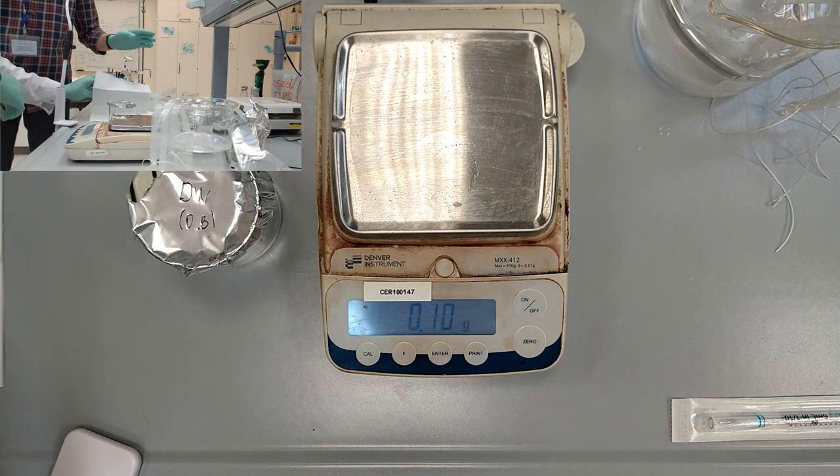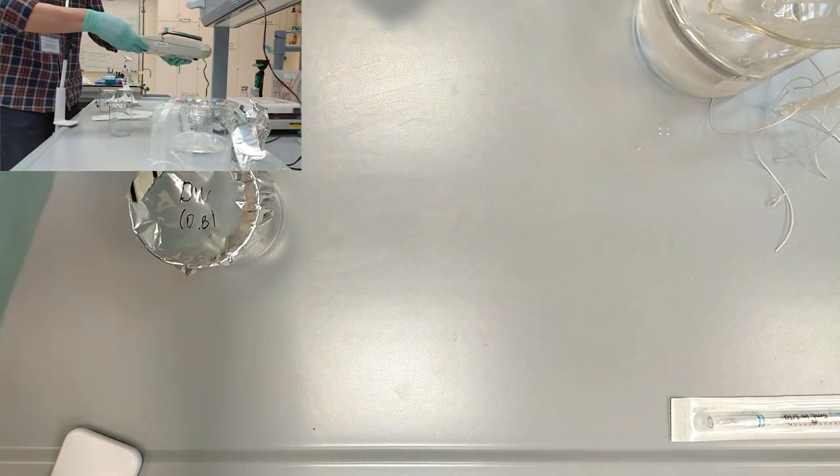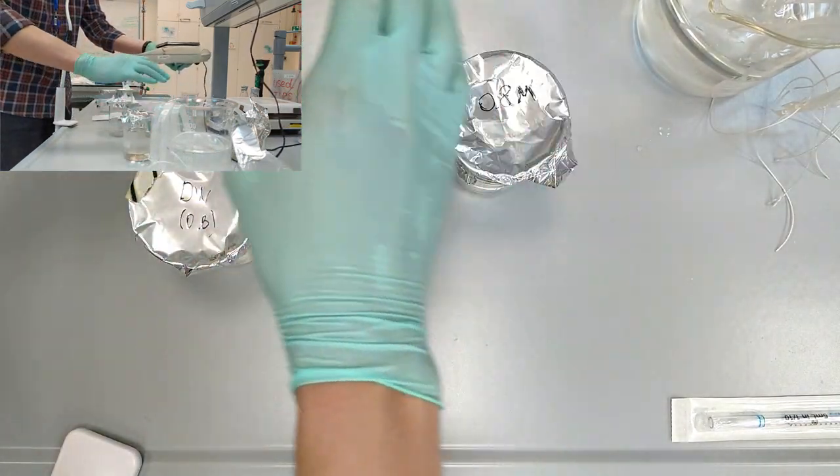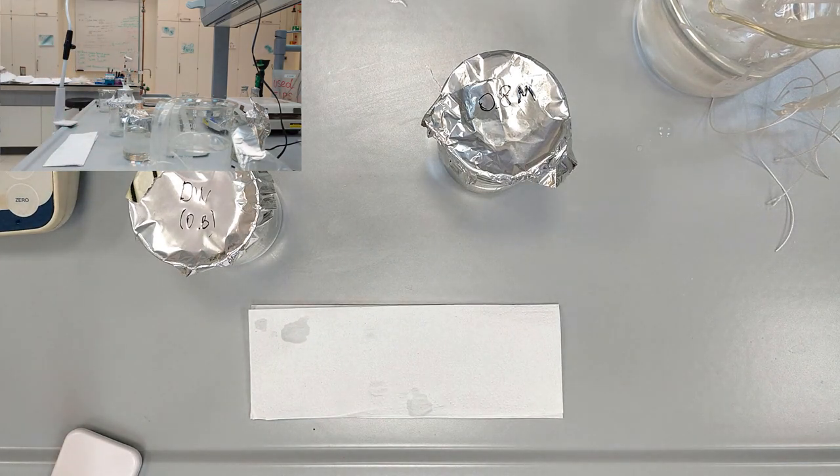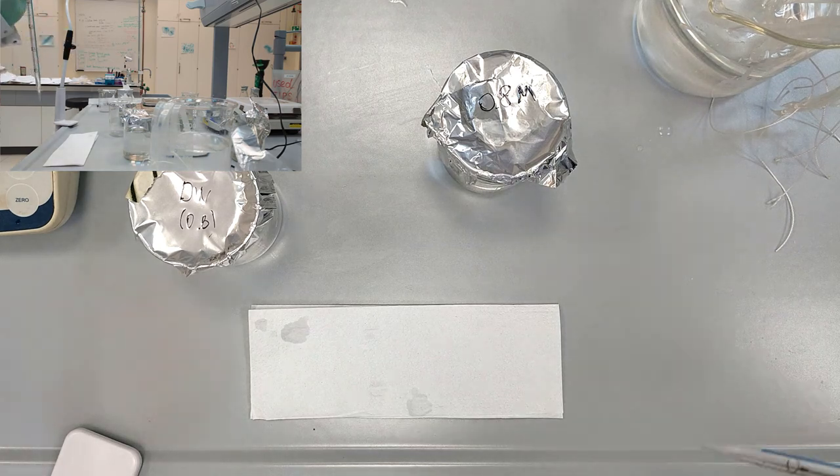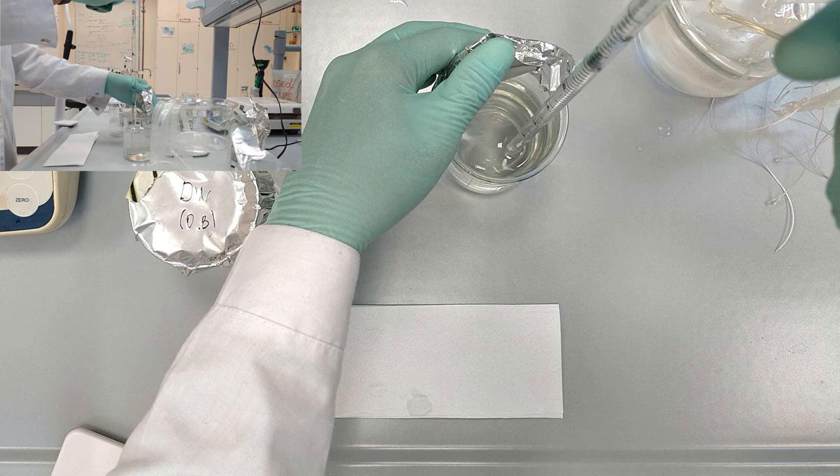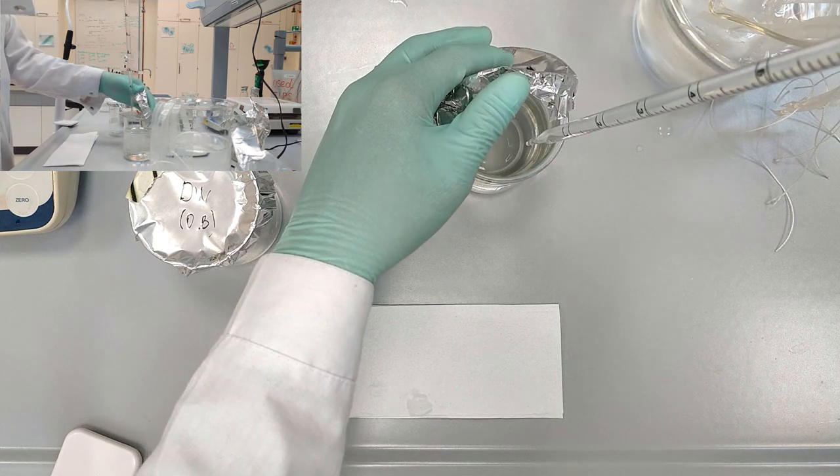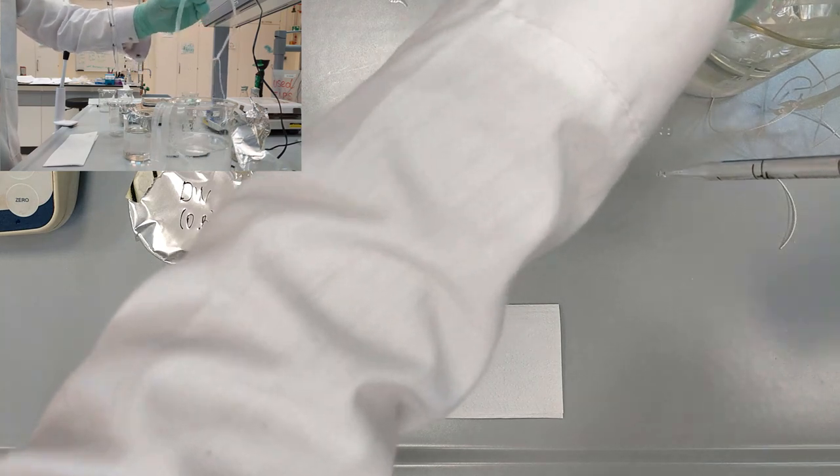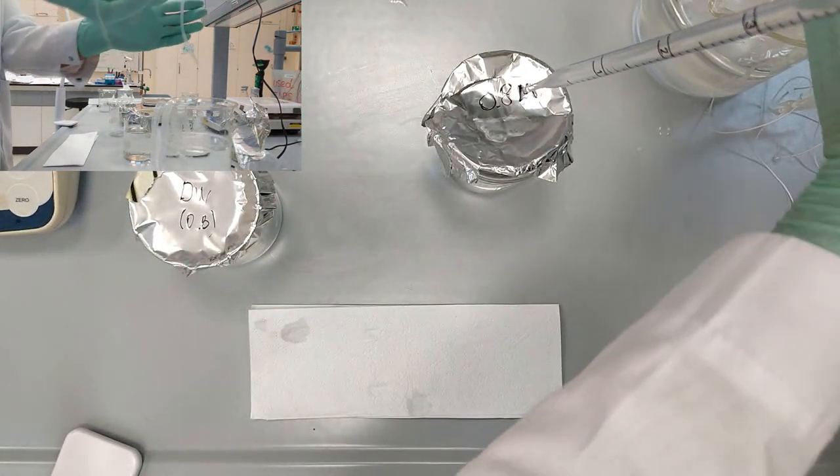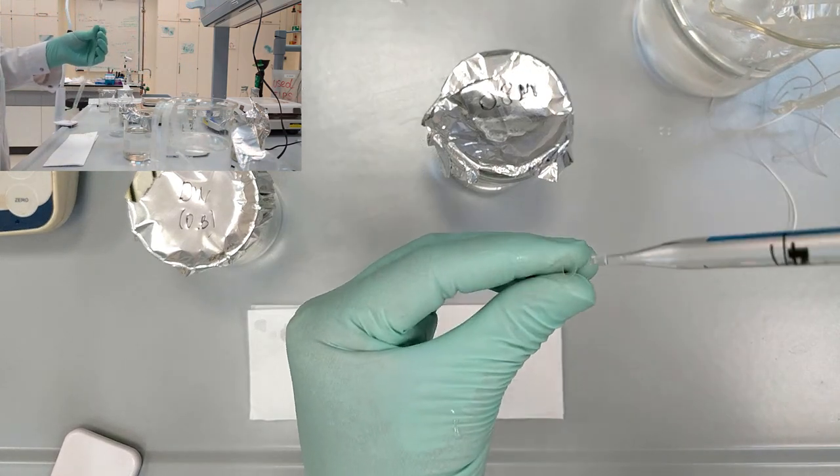The same preparation of the dialysis tube will go for 0.8 and 0.4 mols per liter concentrations. Pipet up the appropriate volume of the solution, take the dialysis tube, open the open edge of it and then transfer this solution inside.